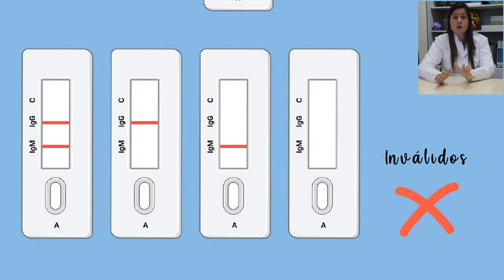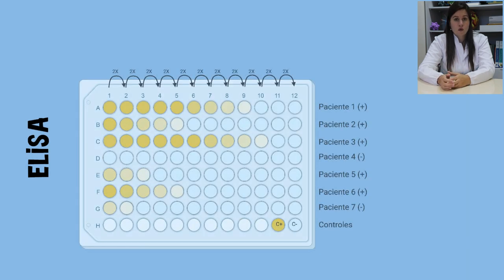Os testes rápidos são apenas qualitativos, não quantitativos. Outras técnicas, como a ELISA, por exemplo, permitem estimar a concentração de moléculas de anticorpo no soro.